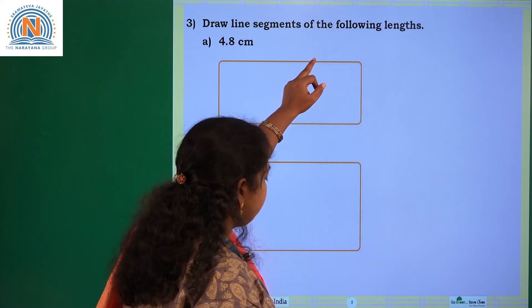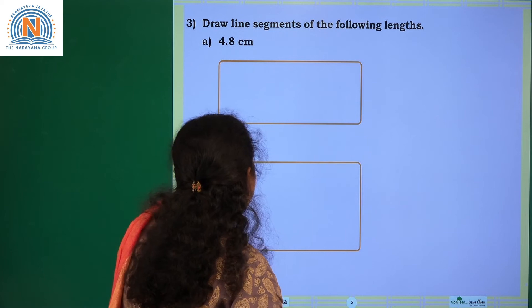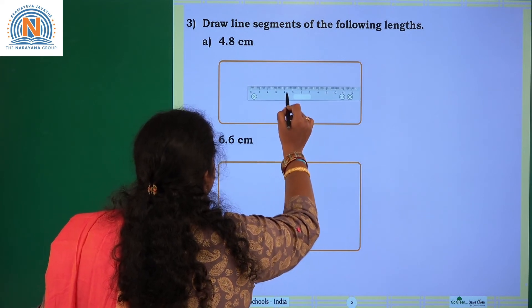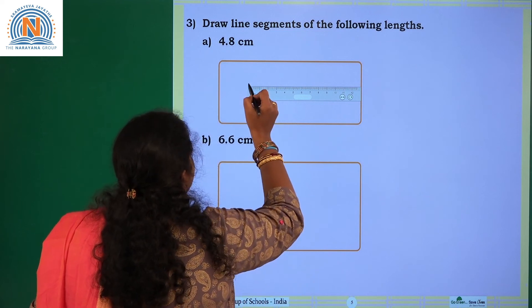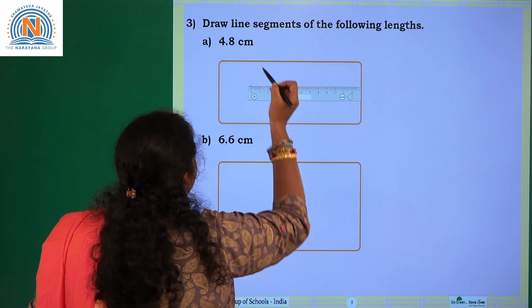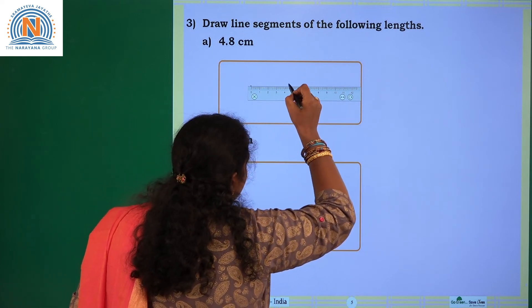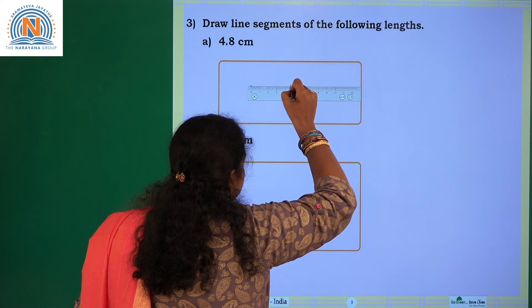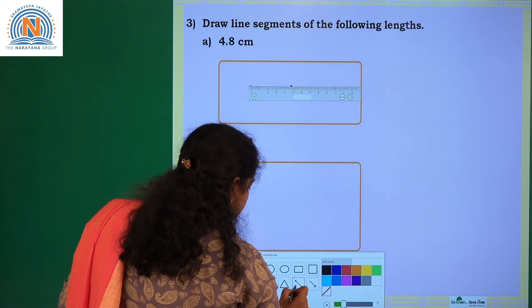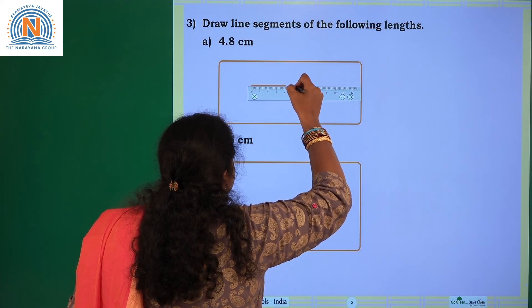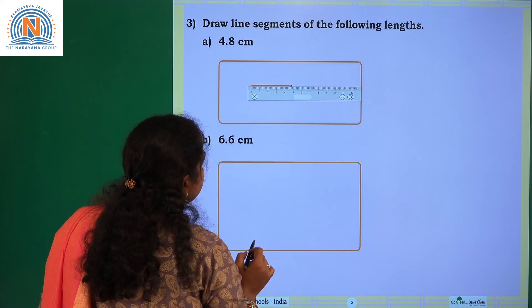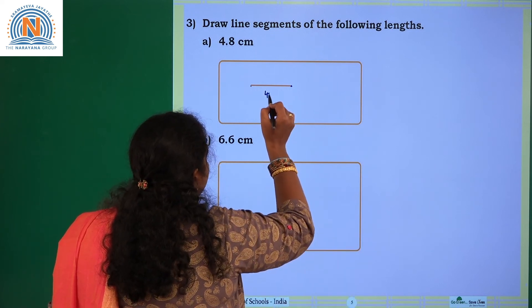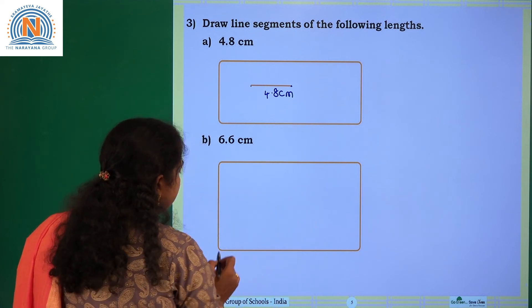Draw line segments of the following lengths. First, 4.8 centimeters. Take a ruler and mark the initial point at 0. Measure to 4.8 — that is before 4.9, just before 5. Mark that point, join the two points, and name this line segment as 4.8 centimeters in length.